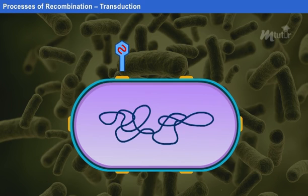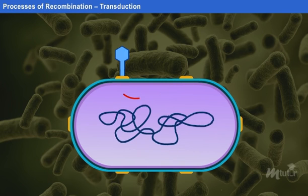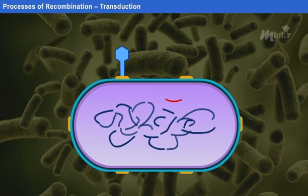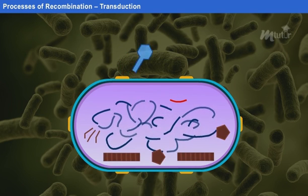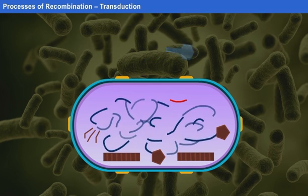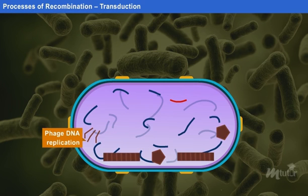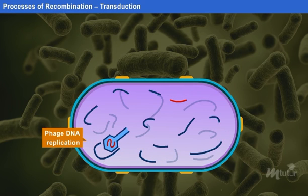At first, the phage connects to the bacterial cell and infuses its genetic material into the host cell. An enzyme is synthesized by the phage that disintegrates the bacterial DNA into smaller fragments. The phage DNA gets replicated and coat proteins are produced.